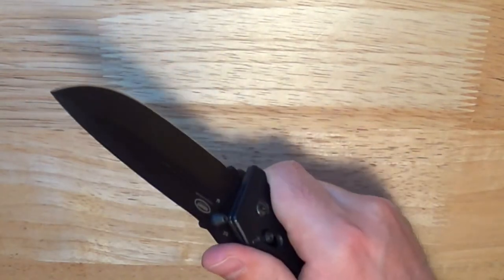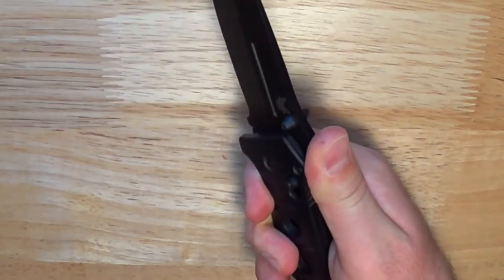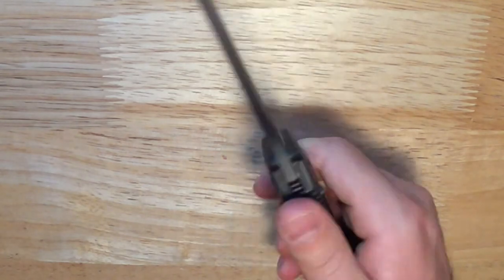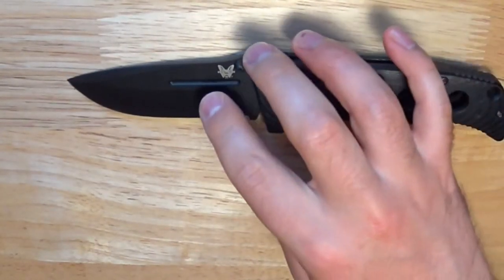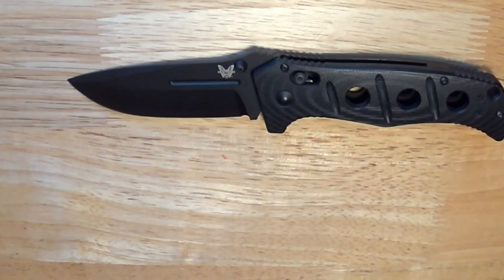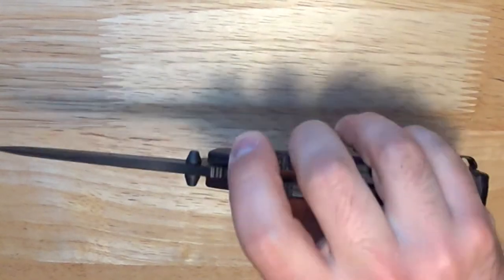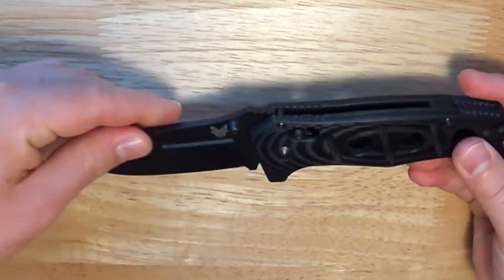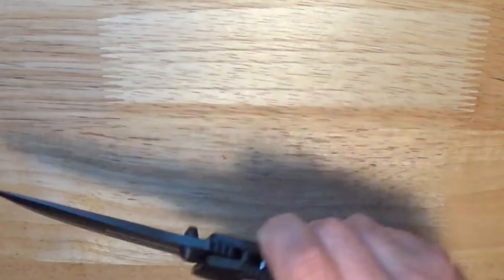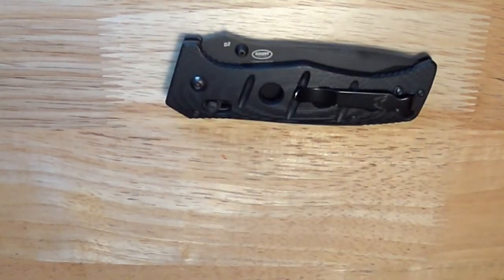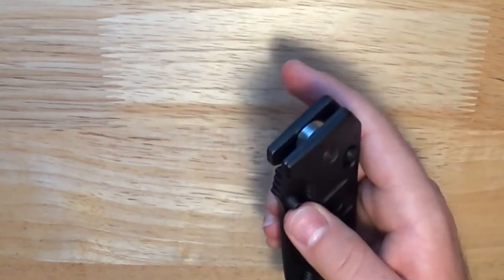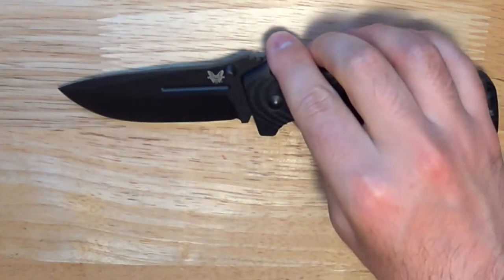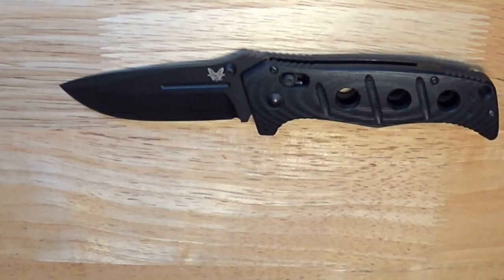The Benchmade Adamas has a 3.82 inch D2 drop point blade. It's coated with a black coating, 0.160 inch thick. The knife is 8.7 inches overall, and when closed, it is 4.88 inches, and weighs 7.68 ounces. The Benchmade Adamas sells for $195.50, up from when I bought it way back in 2013 for $132.